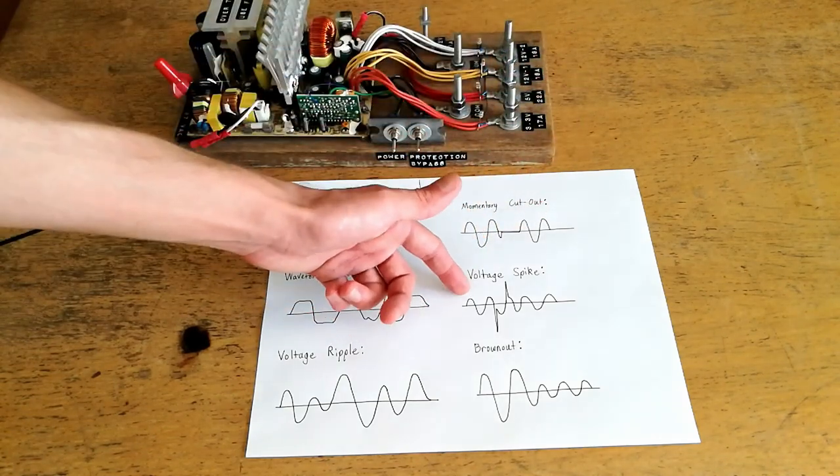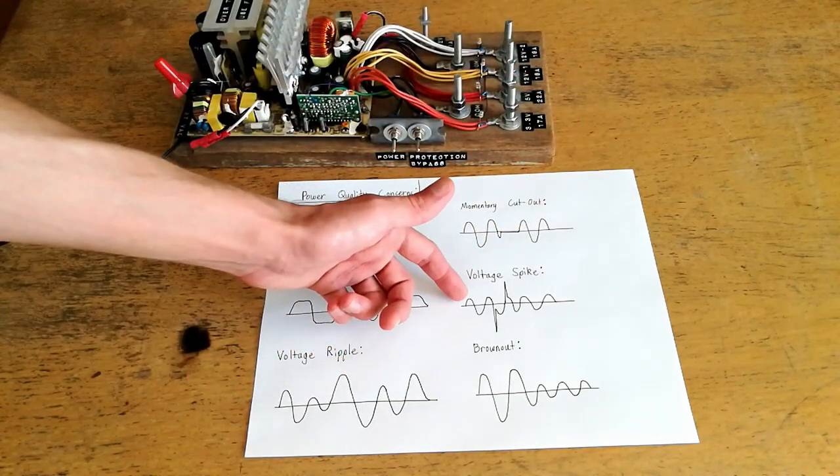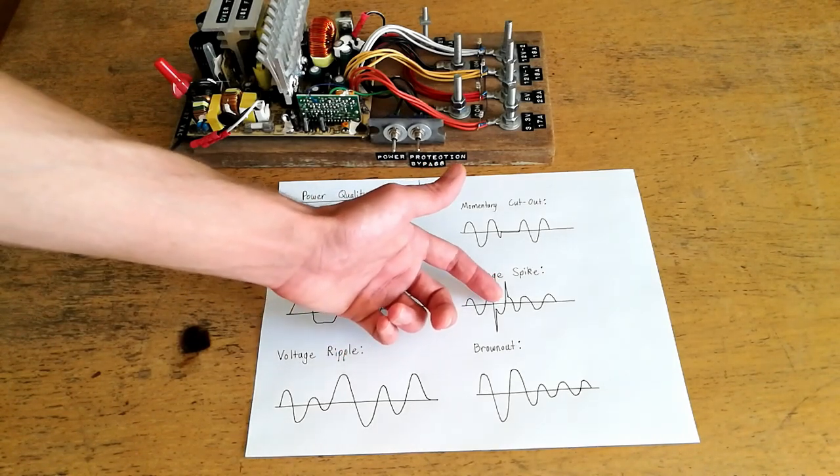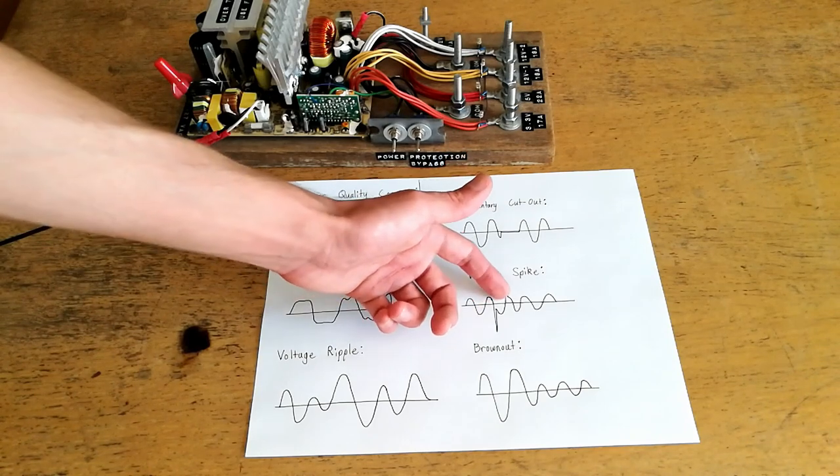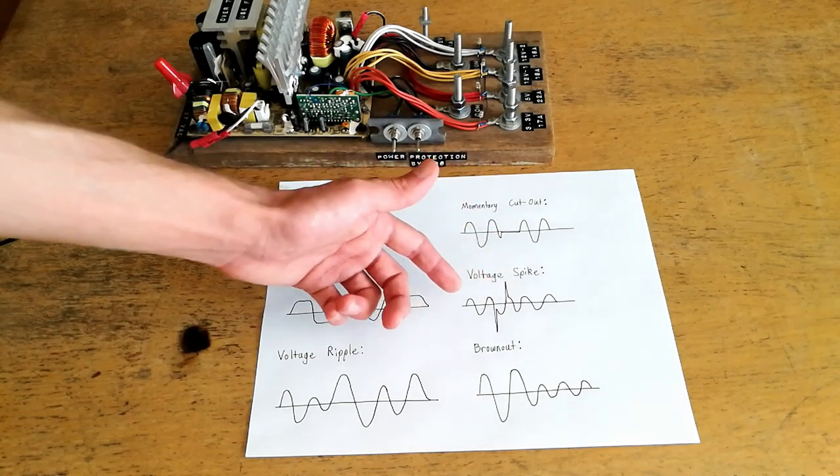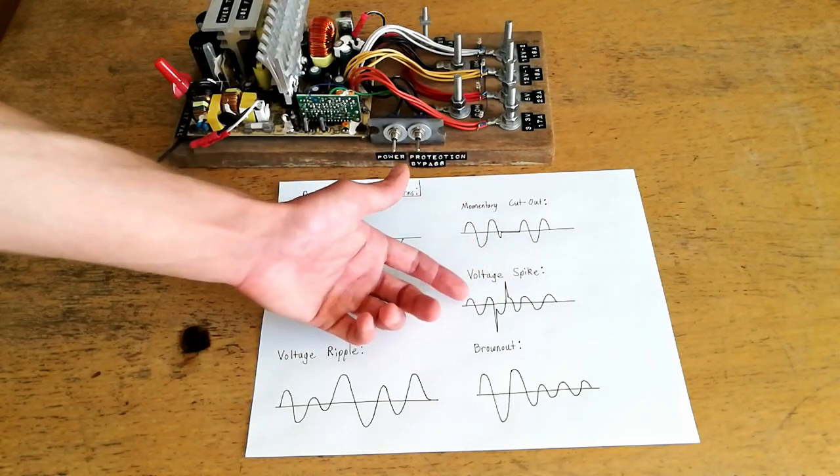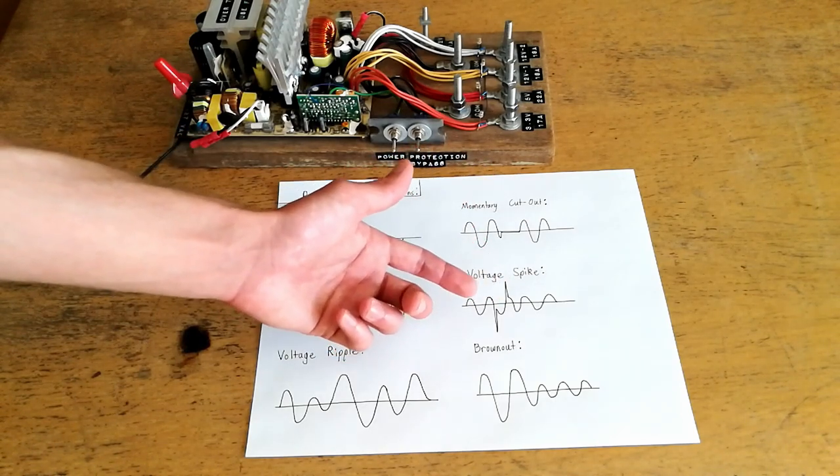Another problem that's similar to voltage ripple but somewhat more pronounced is voltage spiking. This can happen when there are large inductive loads on a circuit and they're suddenly switched off. That can lead to a sudden back EMF that raises the voltage substantially and this can result in potential damage to electronics or equipment that is not well filtered.